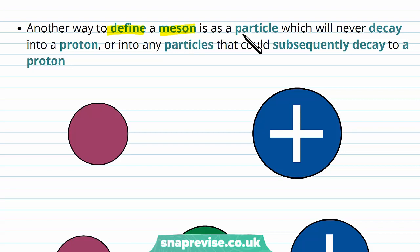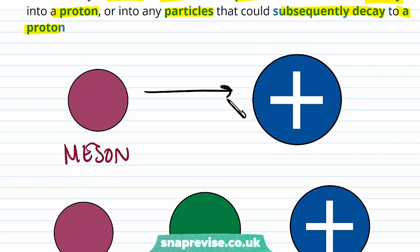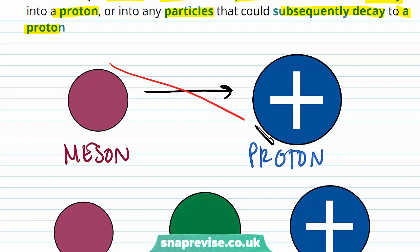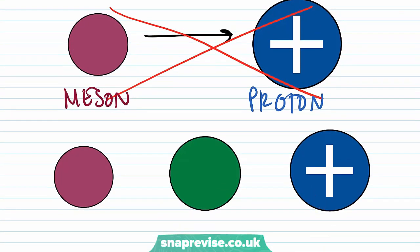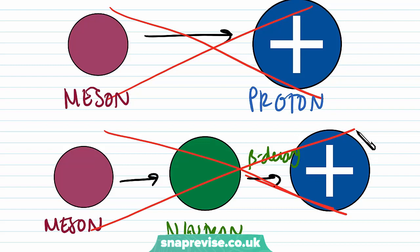Another way to define a meson is as a particle which will never decay into a proton, or into any particles that could subsequently decay to a proton. So a meson cannot decay into a neutron which then decays into a proton via beta decay. This confirms that mesons aren't baryons — they're their own group of particles.